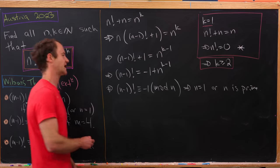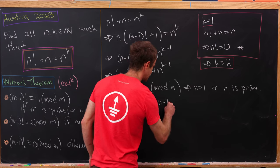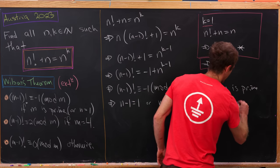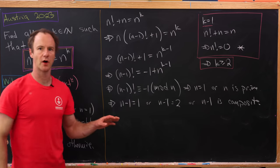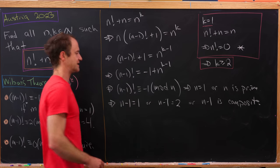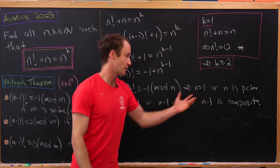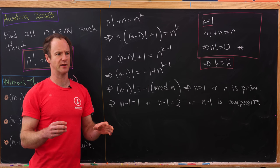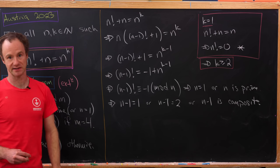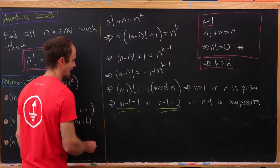This breaks down into cases: n-1 = 1, or n-1 = 2, or n-1 is composite. The only consecutive primes are 2 and 3, so n-1 = 2 corresponds to n = 3. Otherwise, any prime is preceded by either a composite number or 1, giving us these outer cases.